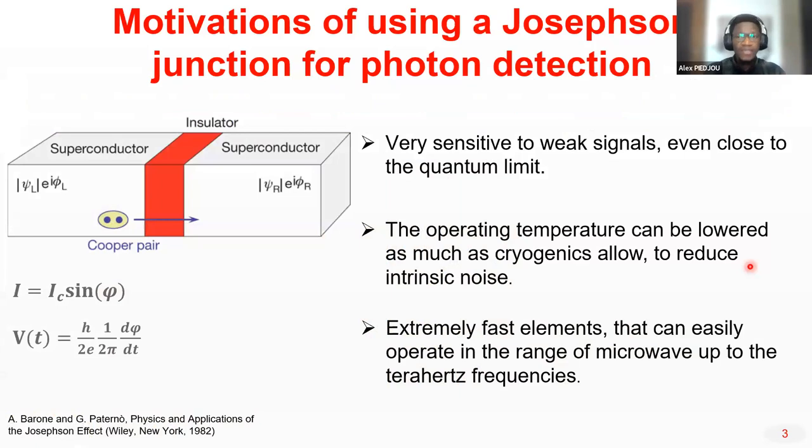So why use the Josephson Junction? I'm pretty sure most of us here are well aware of what is the Josephson Junction. I'm just going to recall it quickly. The Josephson Junction is a device that consists of two superconductors separated by a region that may be an insulator or a normal metal.